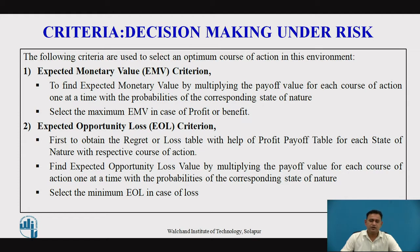For the expected opportunity loss criteria, you first obtain the regret or loss table from the profit payoff table for each state of nature with the respective course of action. After obtaining the regret table, you find out the expected opportunity loss value for each course of action by multiplying the payoff with respect to each course of action with the probability of the corresponding state of nature. Then select the minimum expected opportunity loss value, which defines the optimum course of action for the decision maker.